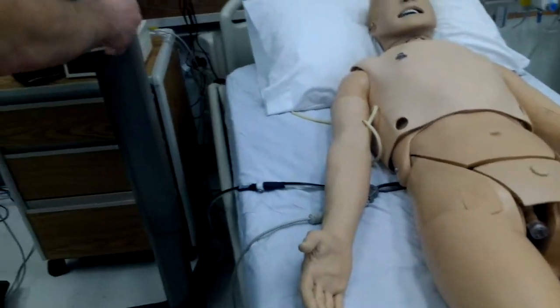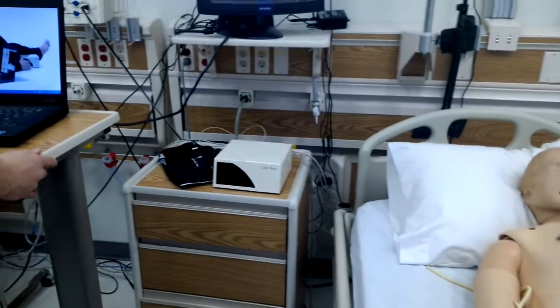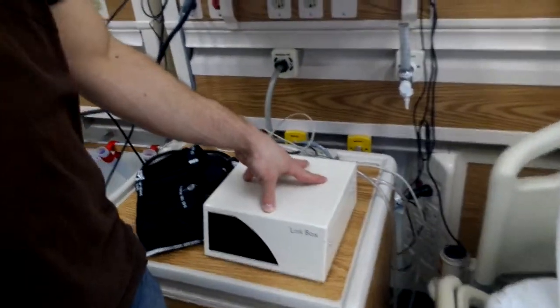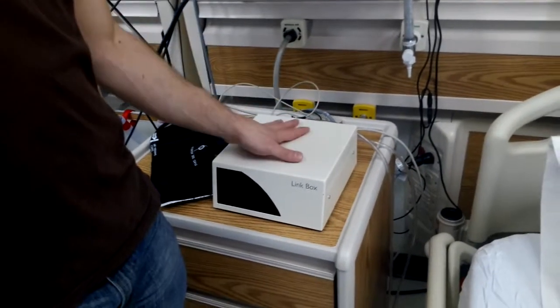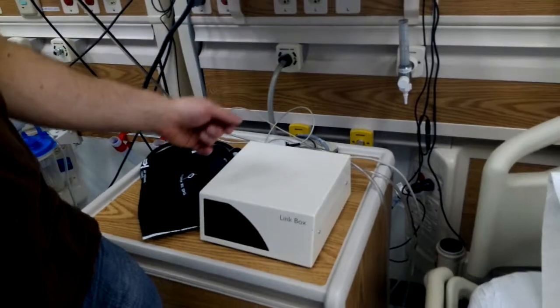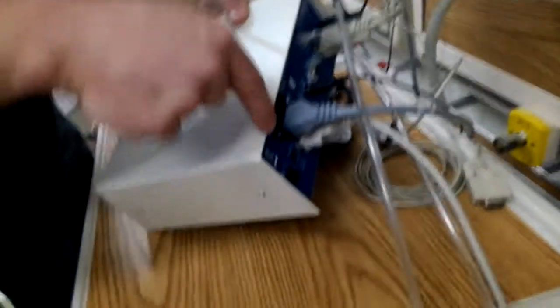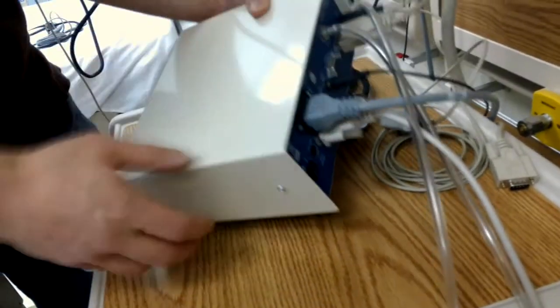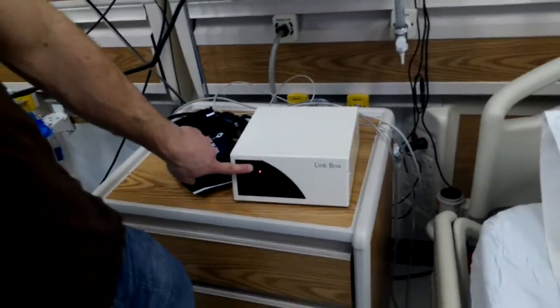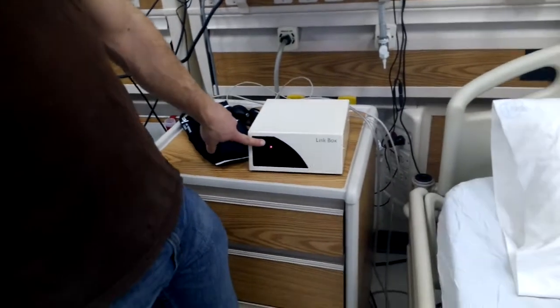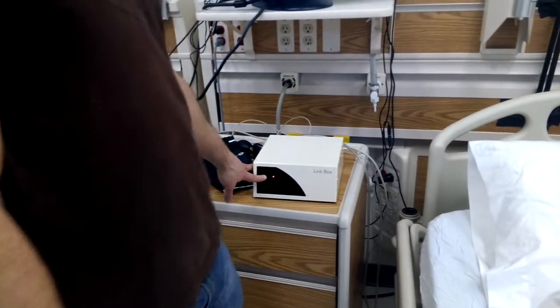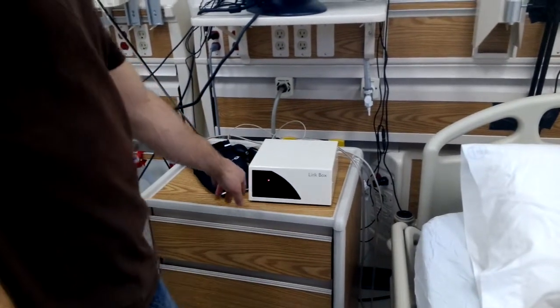Where does that come from? Back here, we have the link box. The link box translates all the commands from the control laptop to the SimMan. So we have to turn the link box on. There's a switch back here. Flip it. And we will see a flashing red light on the link box. What that means is the link box is on, it has power, but it is not receiving any information from the laptop as of yet.